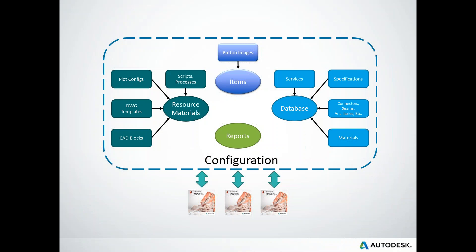Here's what I'm talking about — let's break it out. The configuration has three basic parts: the items, which make up your services and are part of the database file you see on the right; reports, which also reside in this configuration folder; and resource materials, such as templates, CAD blocks, CTB files, and so forth.